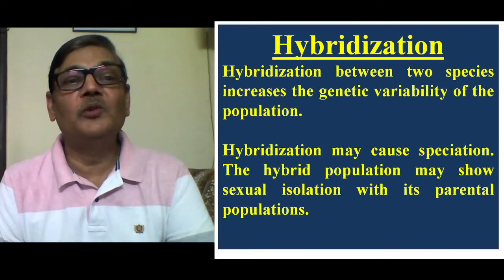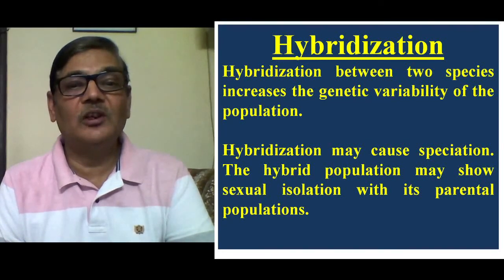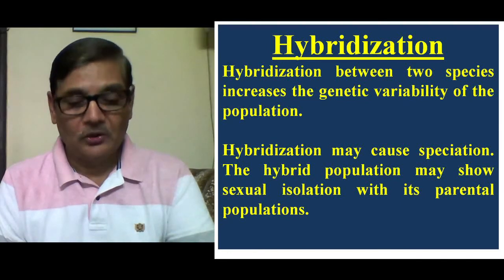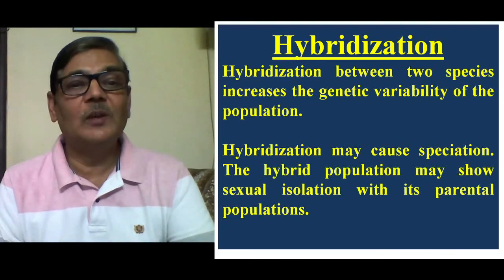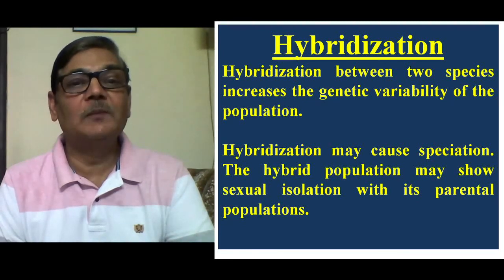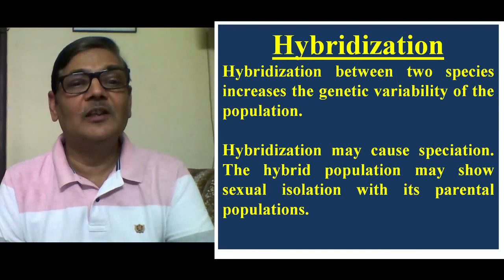The last factor is hybridization. Hybridization between two species increases the genetic variability of the population, and hybridization may cause speciation. The hybrid population may show sexual isolation with its parental populations. These seven major factors are not actually separate — they work together and cause variation among the individuals of a population, which are the major causes of evolution. I explained all these things in brief, and I hope that this information would be useful to understand this particular subject.